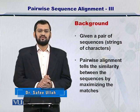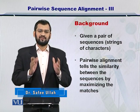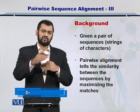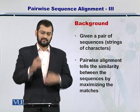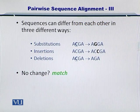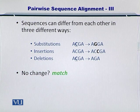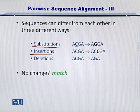Your objective is to maximize the number of matches between the source and the target sequence. So let's review the three sources of differences that can be there in biological sequences. The sequences can differ from each other in three different ways: substitutions, insertions, deletions.